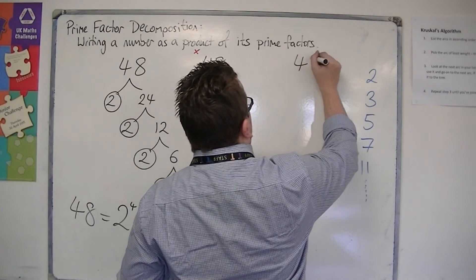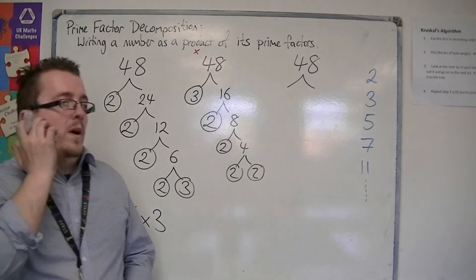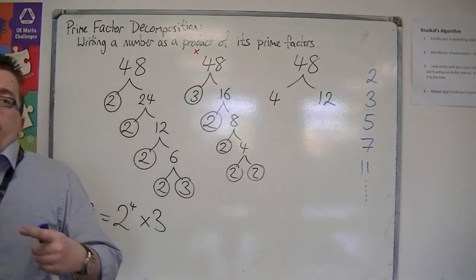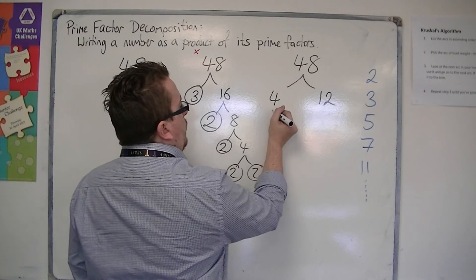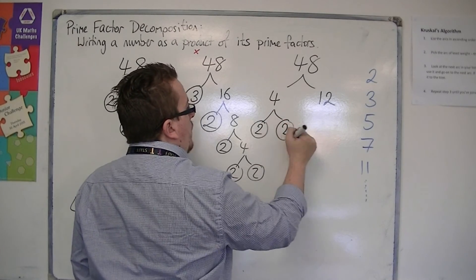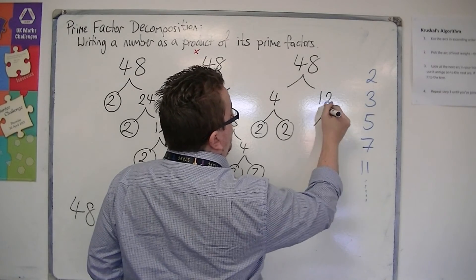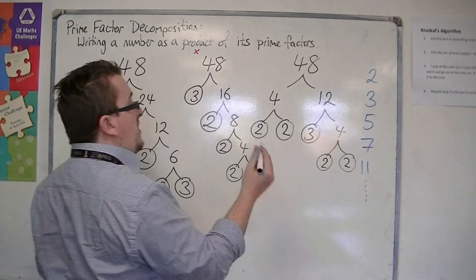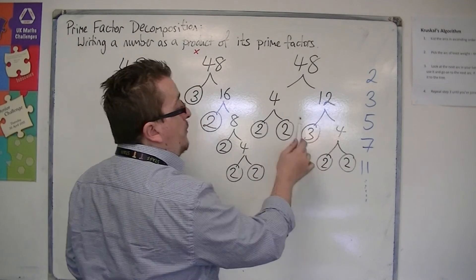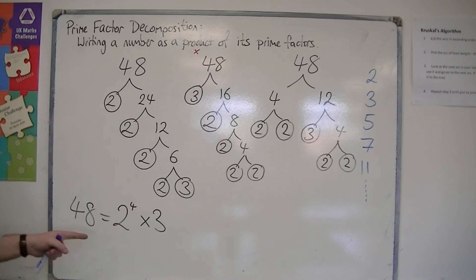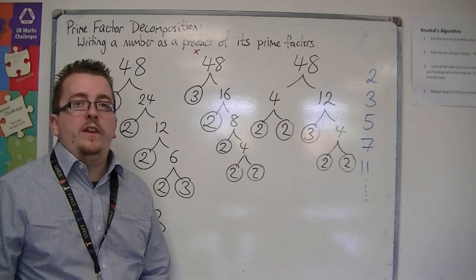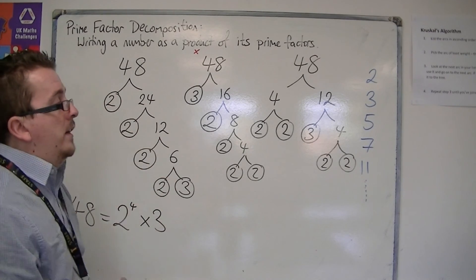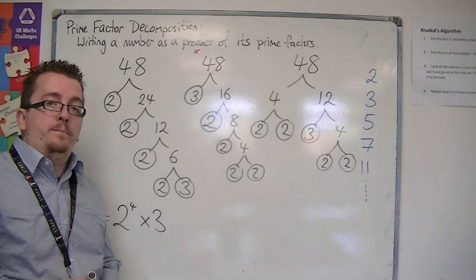You could also look at 48 and say 48 is 4 twelves. Neither of these numbers are prime, so if I look at prime numbers that go into 4 and 12 — 4 is 2 times 2, they're both prime. 12 is 3 fours: 3 is prime, and 4 can be written as 2 times 2. You still end up with 2 times 2 times 2 times 2 times 3 — exactly the same prime factors. So the order in which you do this doesn't matter; you just keep breaking the number down into ever smaller numbers, which makes it easier and easier to find prime numbers that go into them.